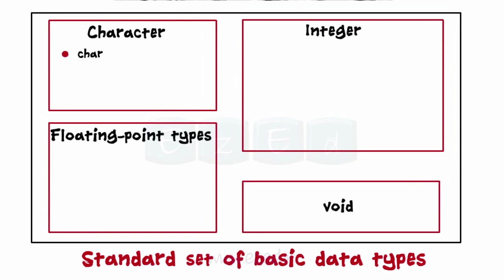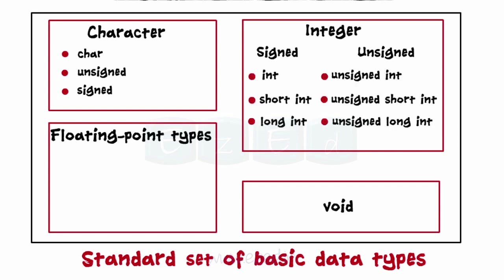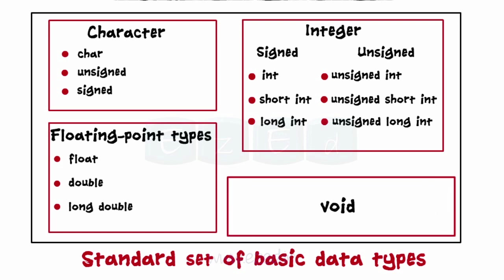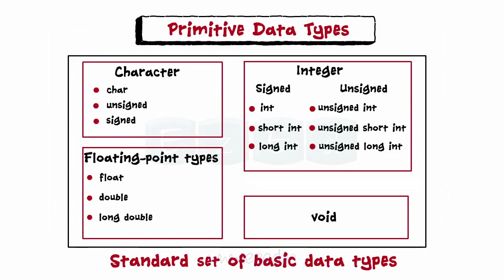Character is further divided into unsigned and signed types. Similarly, integer is further divided into signed and unsigned types, where it can be simply int, short int, or long int. Floating point types include float, double, and long double, while void is a fundamental type and is not classified further.